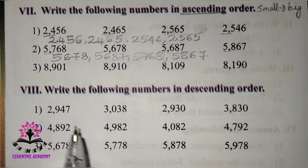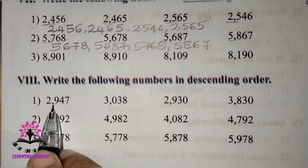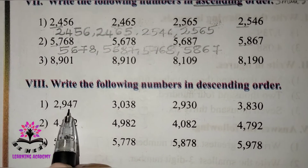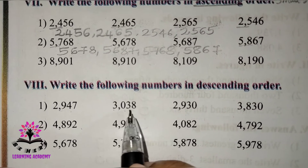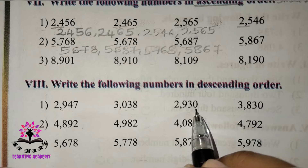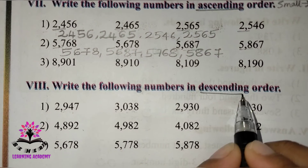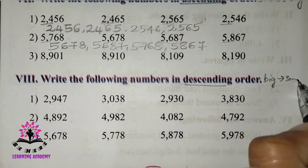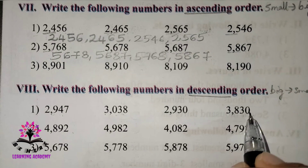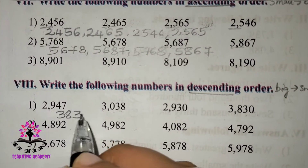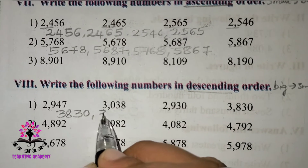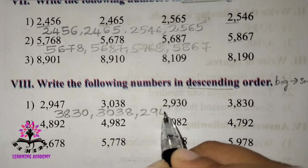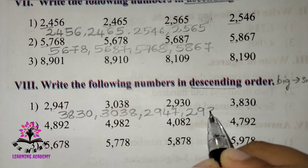Now write the given numbers in descending order. First set: 2947, 3038, 2930, 3830. Descending means bigger number first. The biggest is 3830, then 3038, then 2947, then 2930. Descending order: 3830, 3038, 2947, 2930. Solve the remaining two questions yourself.